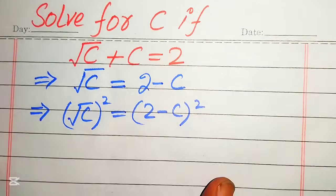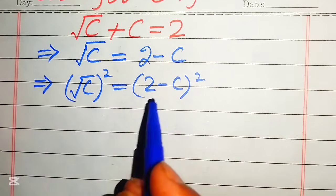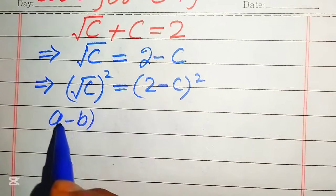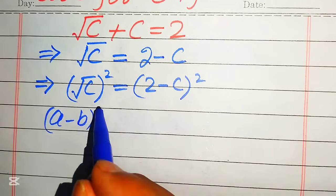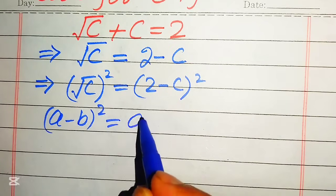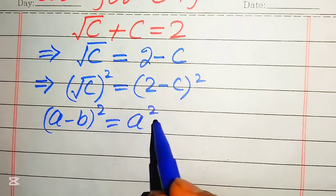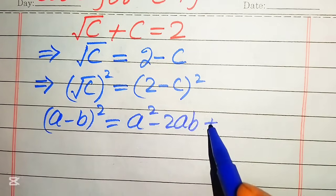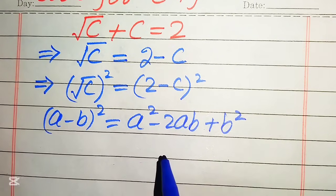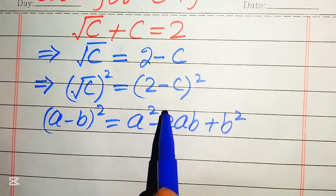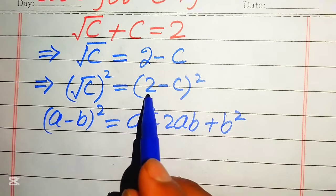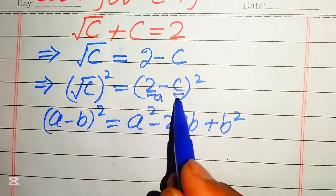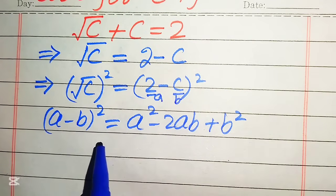In the next step, on the right hand side we apply this nice algebraic formula: if you have (a minus b) whole square, it equals a squared minus 2 times a times b plus b squared. We apply this formula to the right hand side. In this case our a equals 2 and our b equals c.